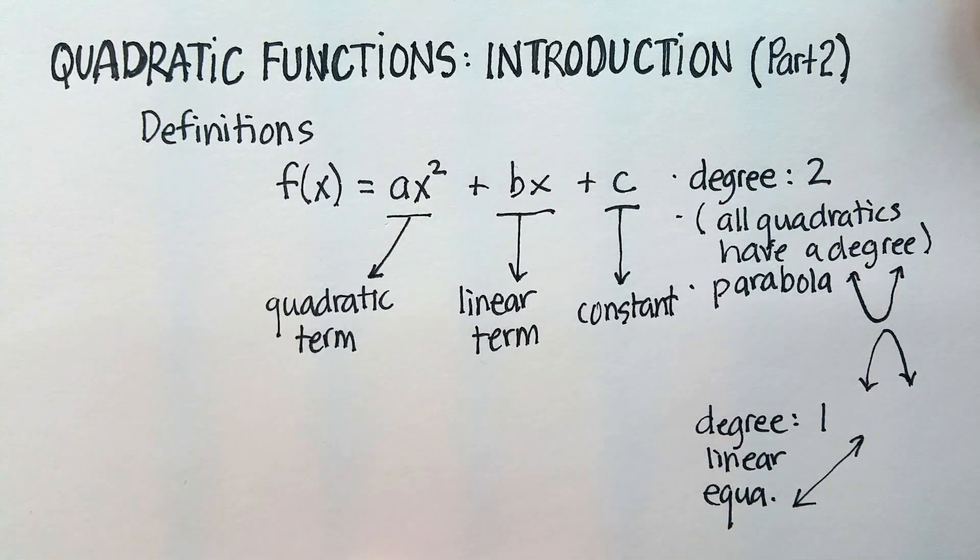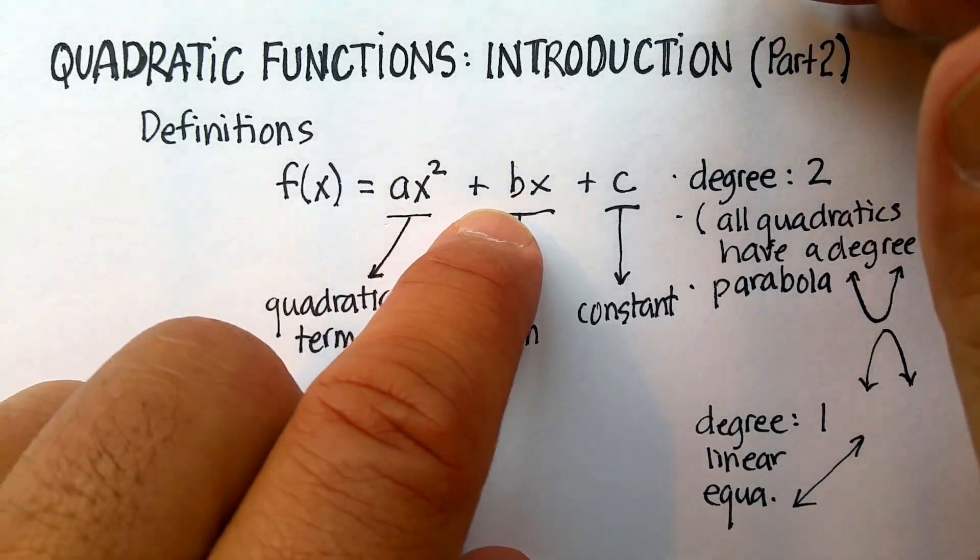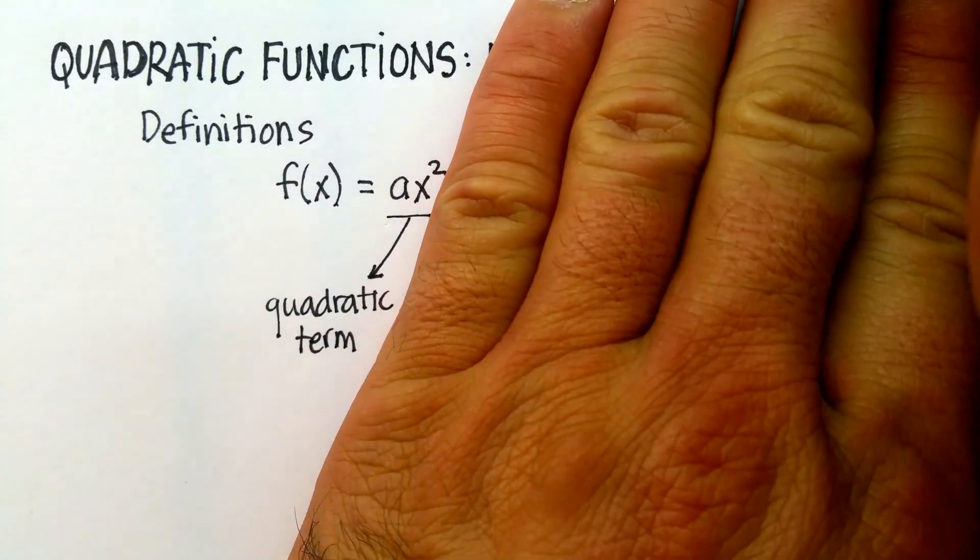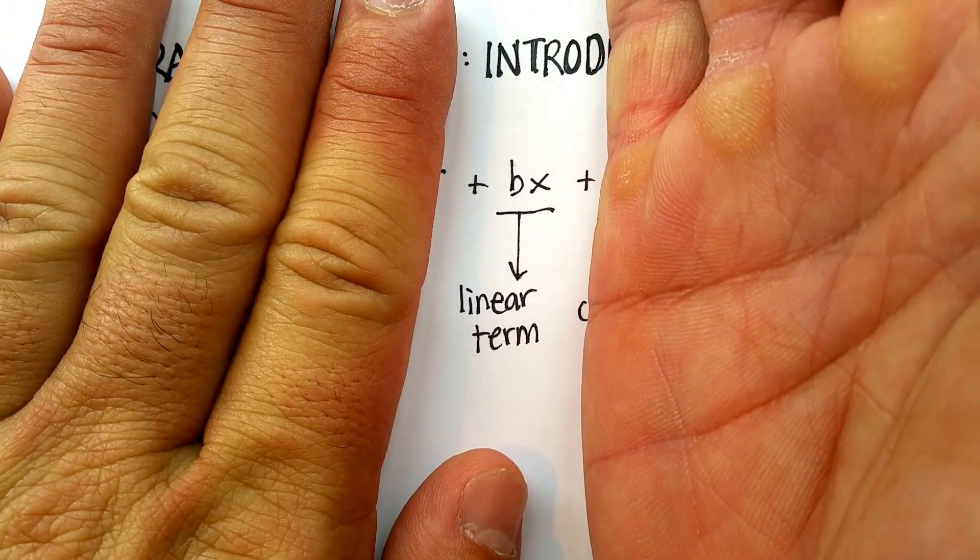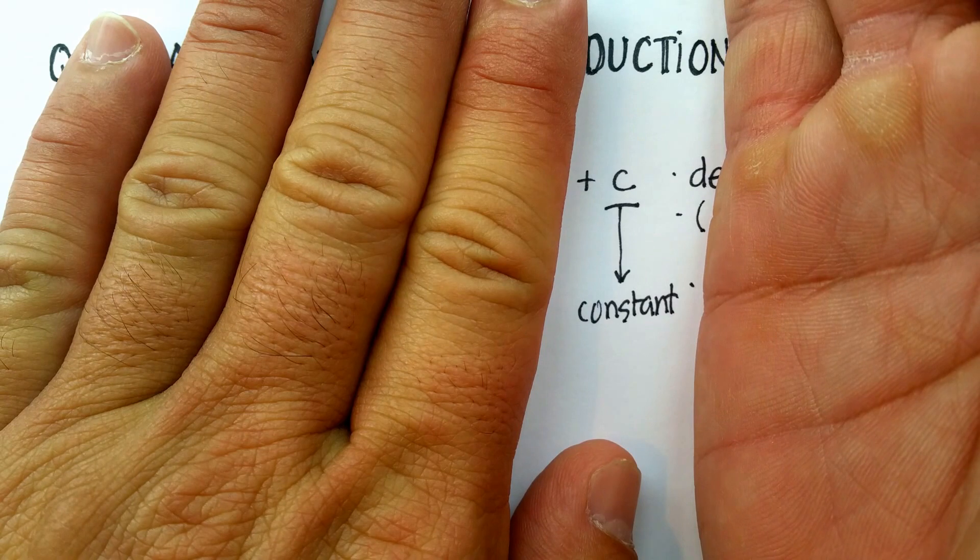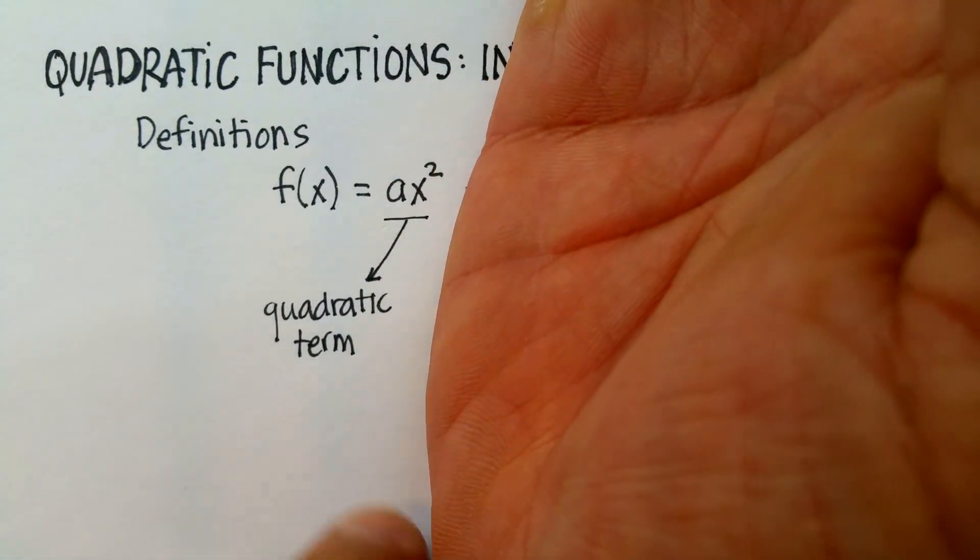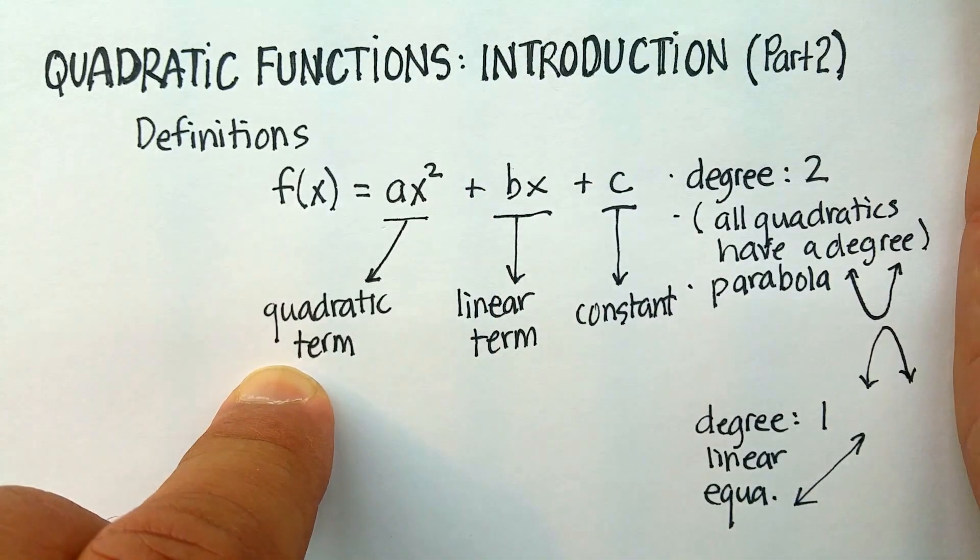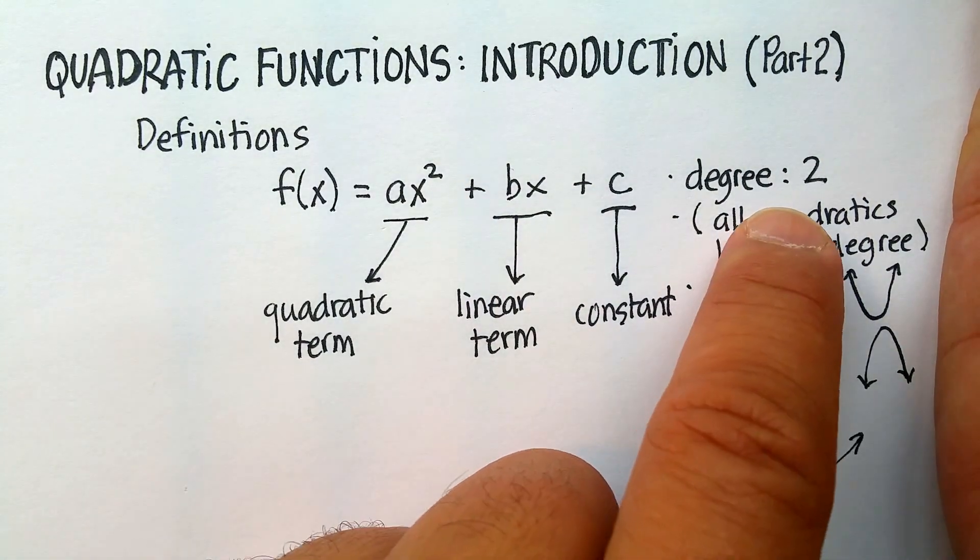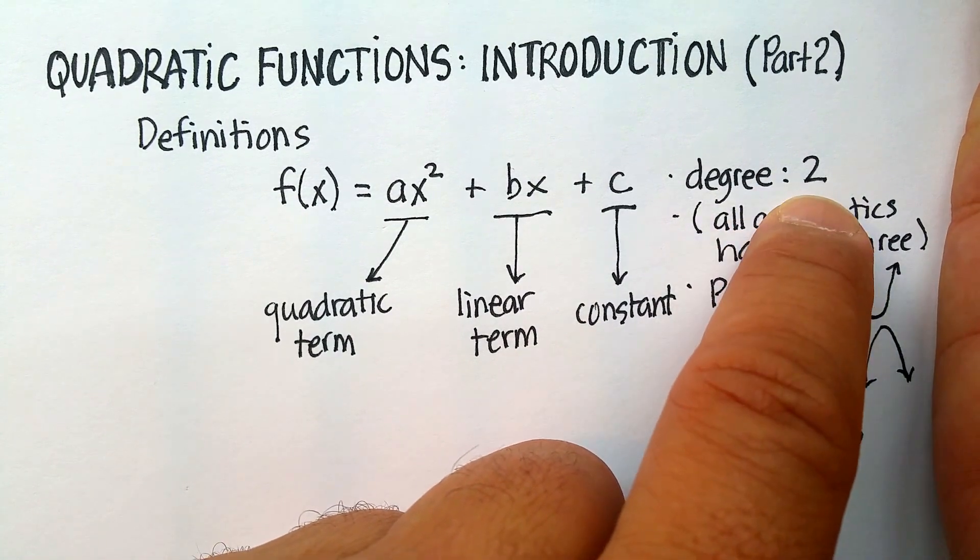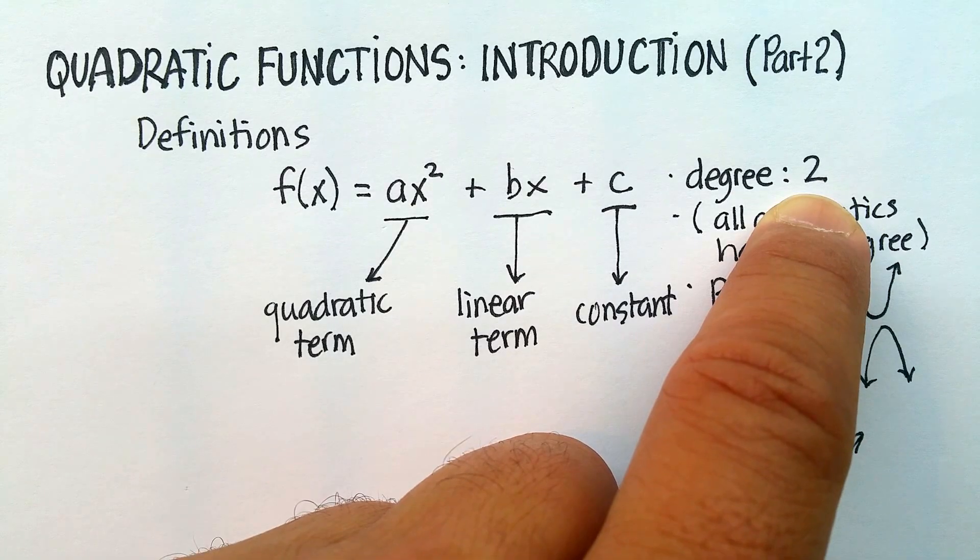So, definition of terms, again, for a quadratic function: ax squared plus bx plus c. That term's called the quadratic term. That term's called the linear term. That term's called the constant term. You really only need just the quadratic term in order to be able to draw the parabola. And remember that the defining characteristic is that it has a degree of two. All right. I hope that was helpful.